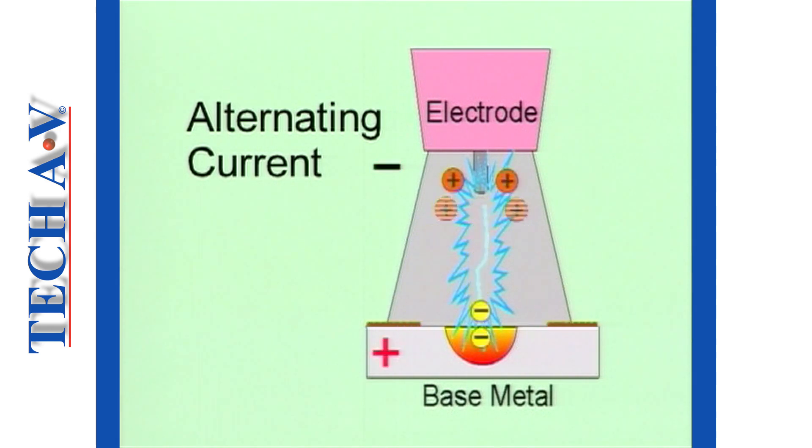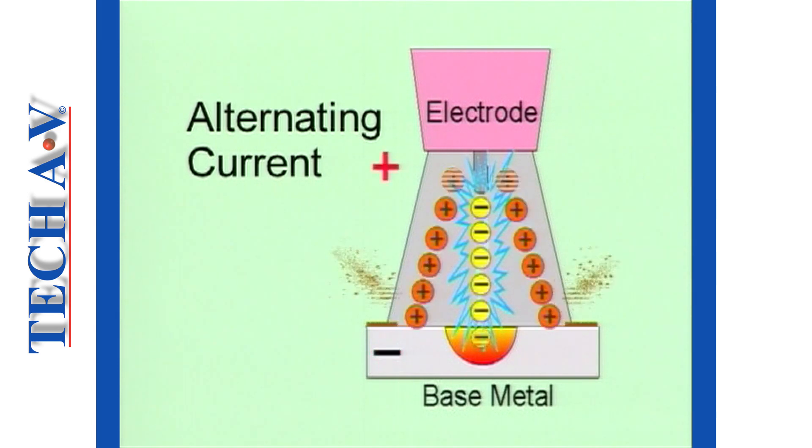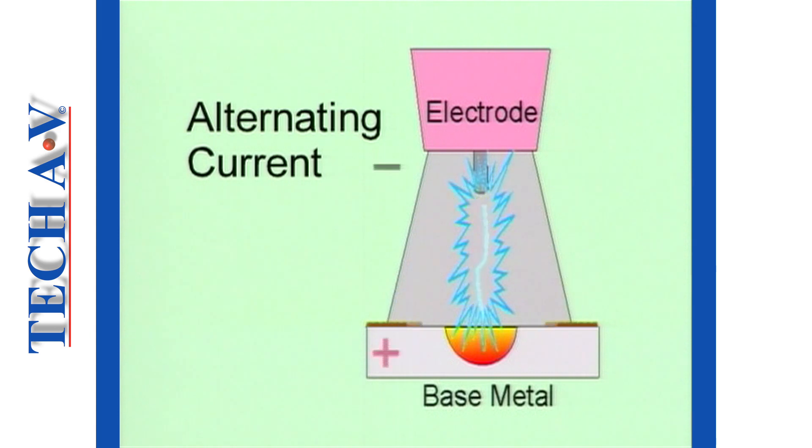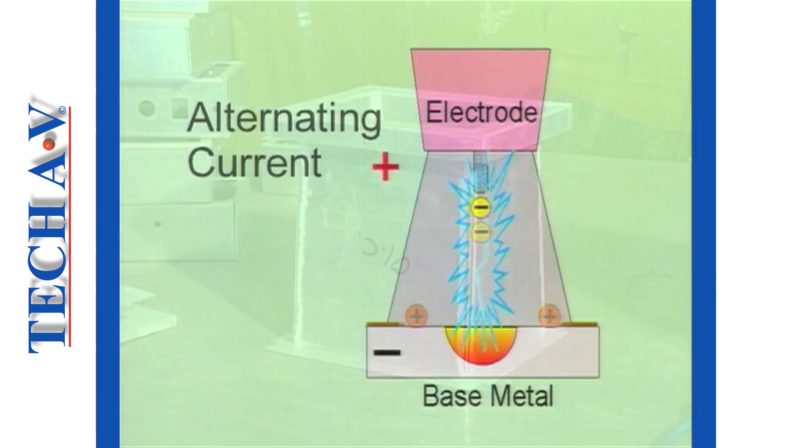Alternating current provides both the penetration of a negative electrode and the cleaning action of a positive electrode. In practice, AC must be stabilized using high frequency, or HF as it is known.